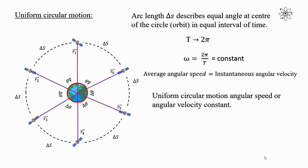In a uniform circular motion, angular speed or angular velocity is constant. As there is no change in the angular velocity, there is no acceleration due to angular velocity. Therefore, the angular acceleration, which is denoted by alpha, equal to dω/dt, is equal to 0. In uniform circular motion, there is no change in the angular velocity, and that's why the angular acceleration is 0.